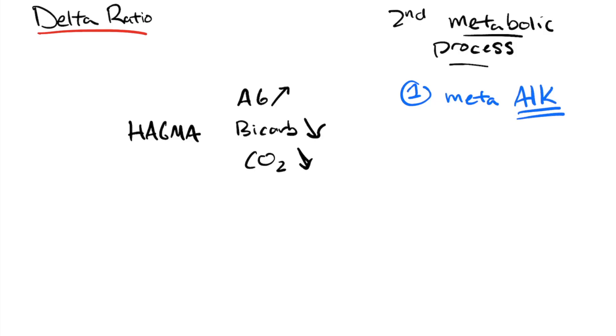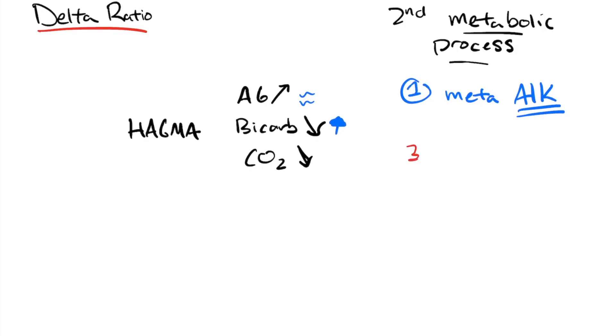So you could imagine, if I have my HACMA, and I, on top of that, have a metabolic alkalosis, my anion gap shouldn't really change much, but now I have a process that's going to drive my bicarb higher.